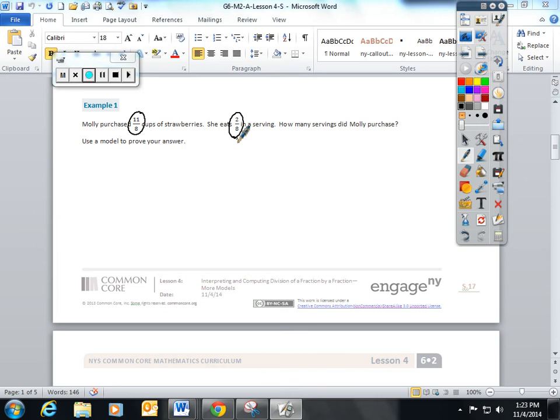For example, Molly purchased 11 eighths cup of strawberries. She eats 2 eighths in a serving. How many servings did Molly purchase? Use the model. So, this is 11 eighths divided by 2 eighths. This model is kind of interesting to draw because a whole is made of 8 parts and you have 11.